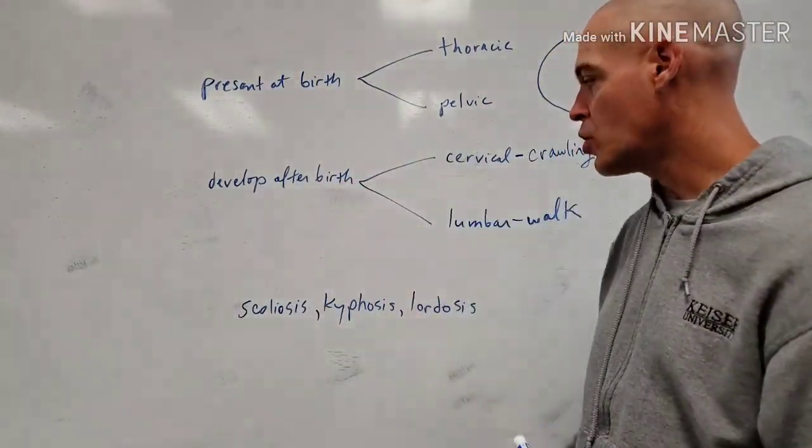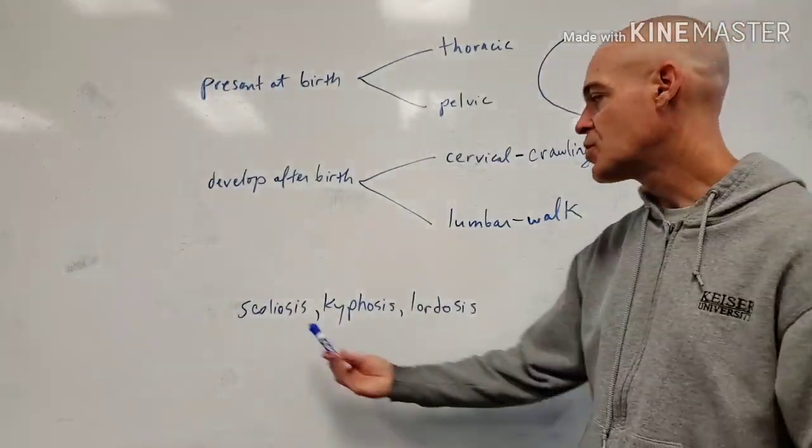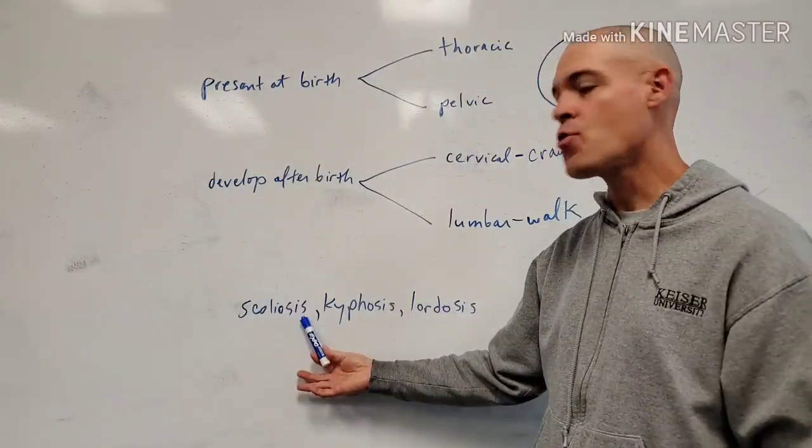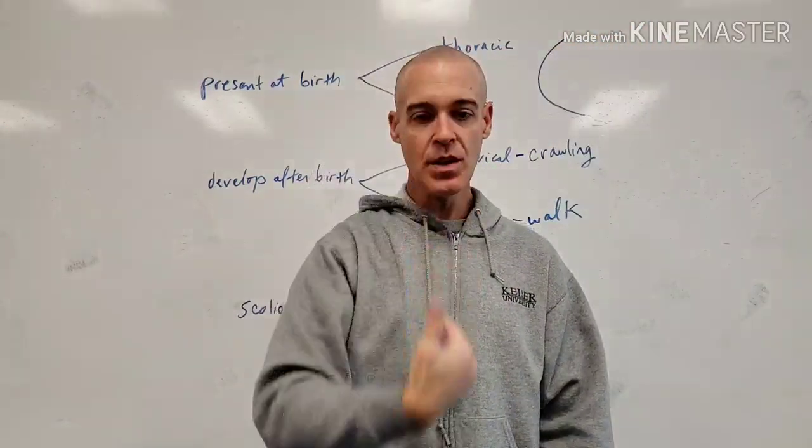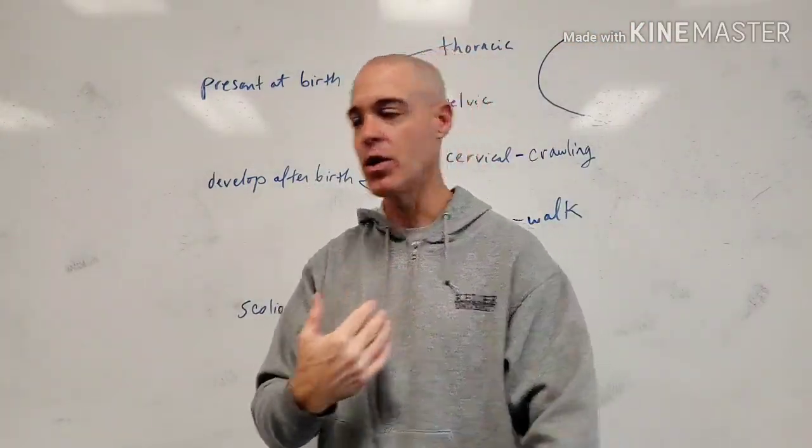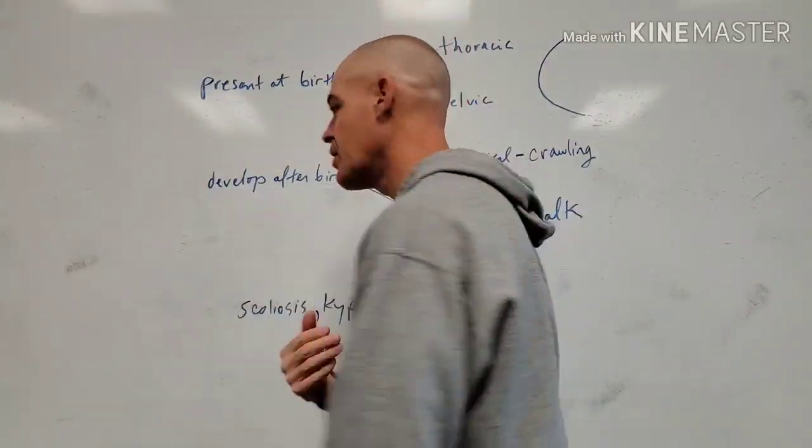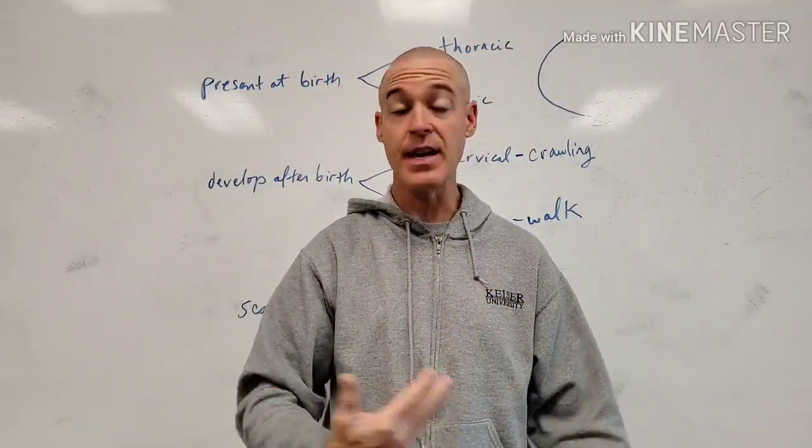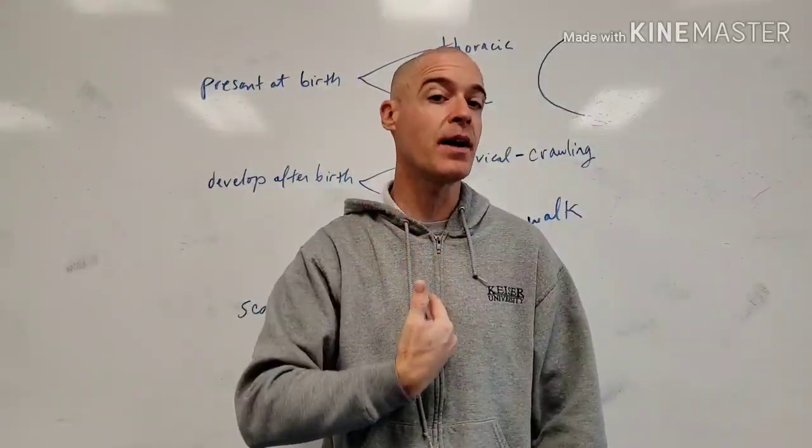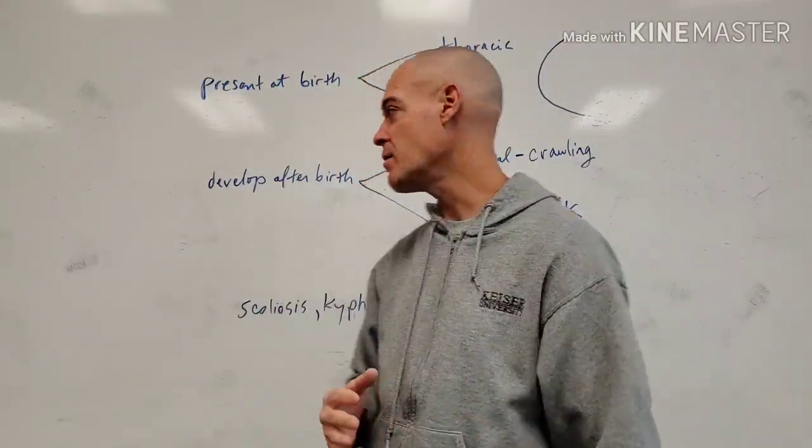Now, what about the abnormal curves really quickly? Scoliosis is considered an abnormal lateral curvature. So if you look at somebody anterior to posterior, or look at them posterior to anterior, when you look at somebody, they will have an abnormal lateral curve. And again, theoretically, it could be cervical, thoracic, or lumbar, where you see that take place.